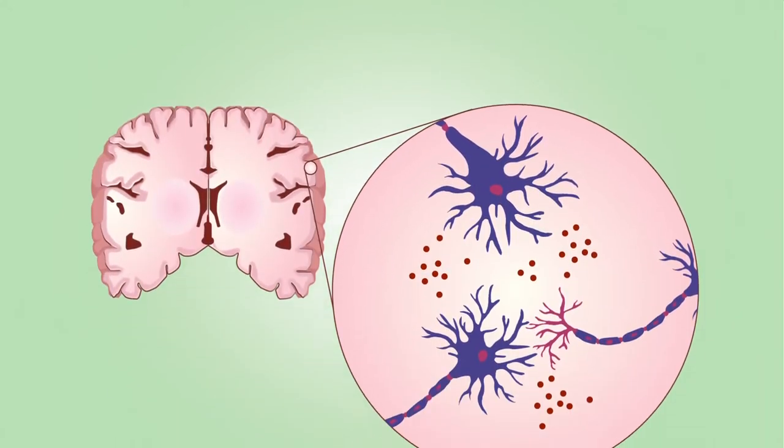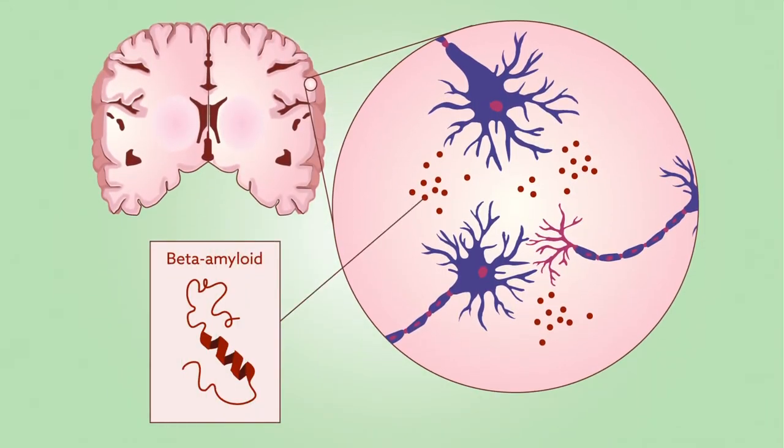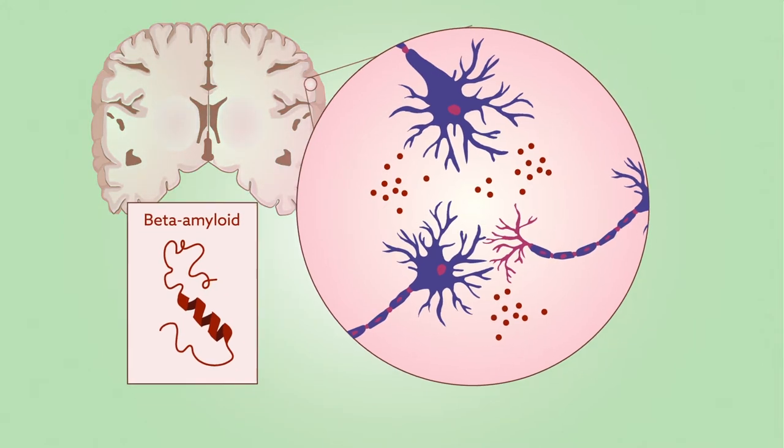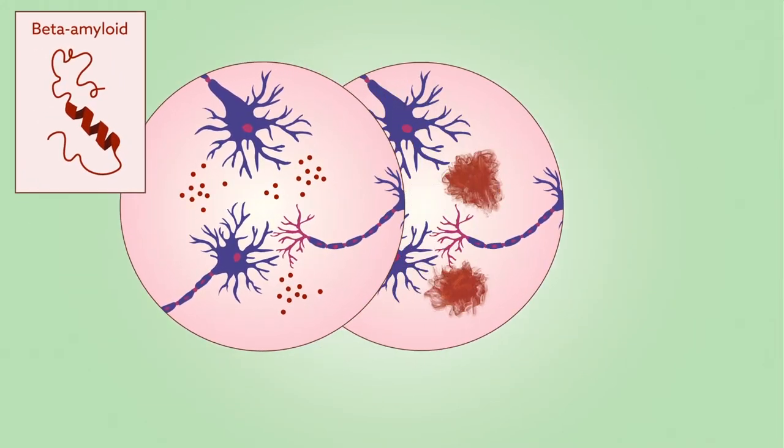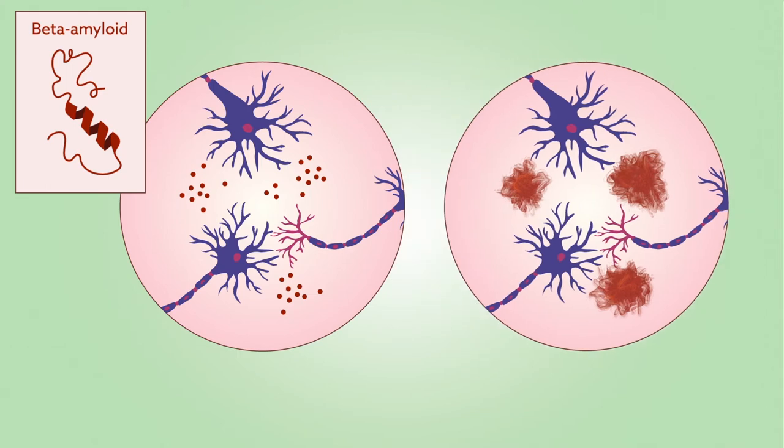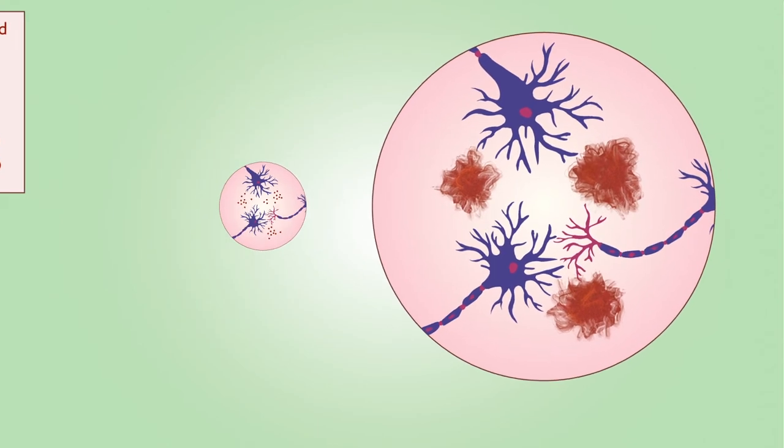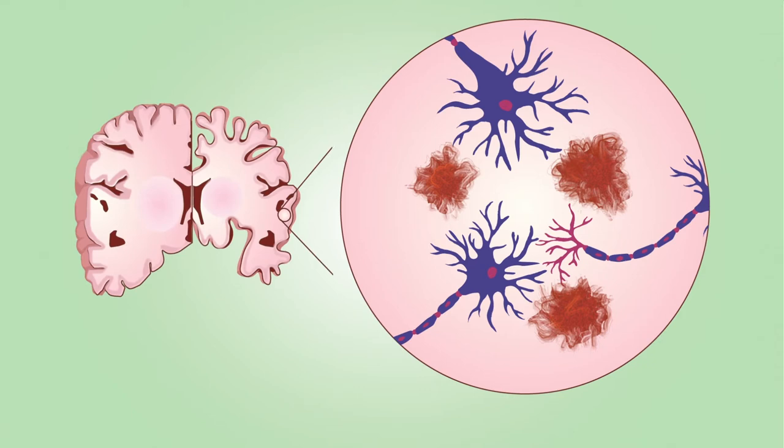The APOE gene helps determine how much beta-amyloid accumulates in the brain. Beta-amyloid starts as small misfolded bits of protein that clump together to form the plaques that are the hallmark of Alzheimer's. As the plaques appear, the brain deteriorates, particularly in regions associated with memory.